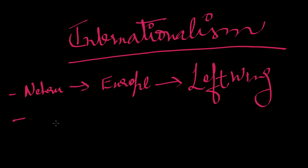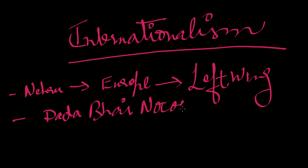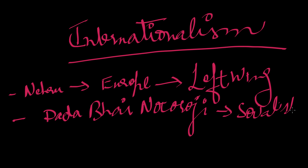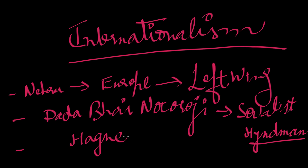Let's talk about Dadabhai Naoroji. He was a close friend of a socialist, and he also had a friendship with another socialist named Hyndman (H-Y-N-D-M-A-N). He even attended the Hague session of the International Socialist Congress in 1904. This shows the international aspect to the whole story of India's foreign policy development.